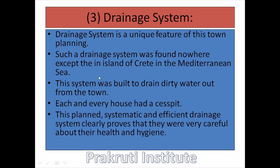The third feature is the drainage system, which is a unique feature of this town planning. Such a drainage system was found nowhere else except on the island of Crete in the Mediterranean Sea. This system was built to drain dirty water out from the town. Each and every house had a drain connected to it. This planned, systematic, and efficient drainage system clearly proves that the people were very careful about health and hygiene.